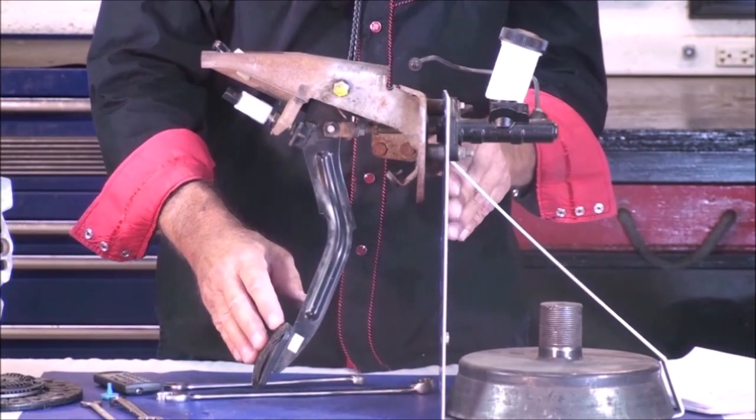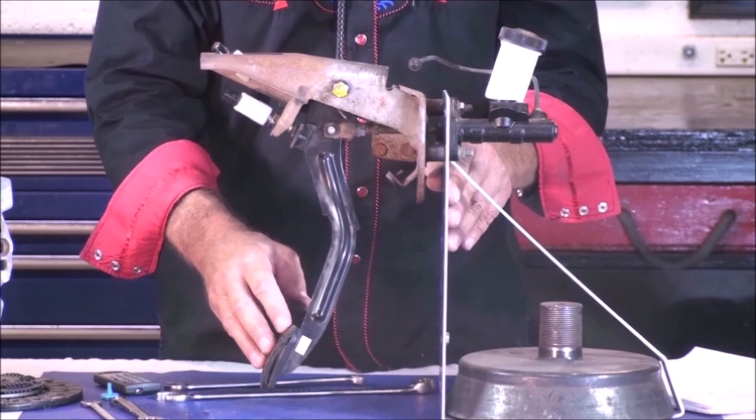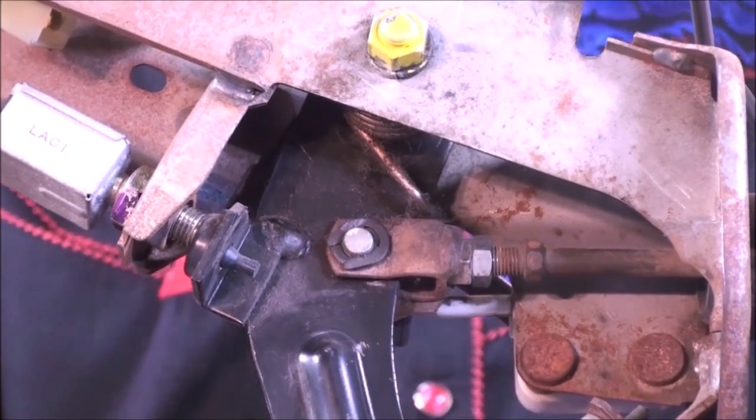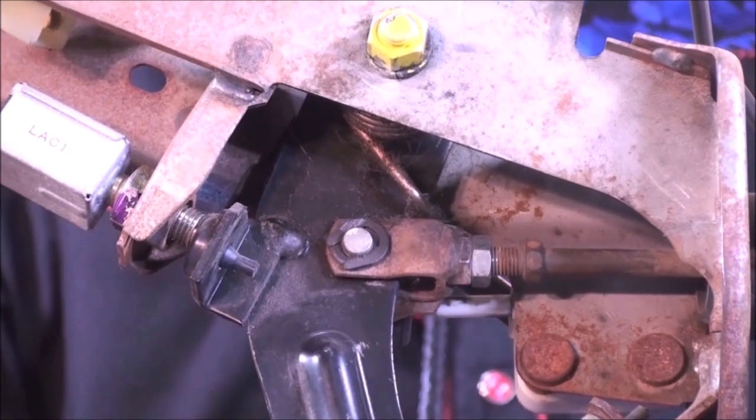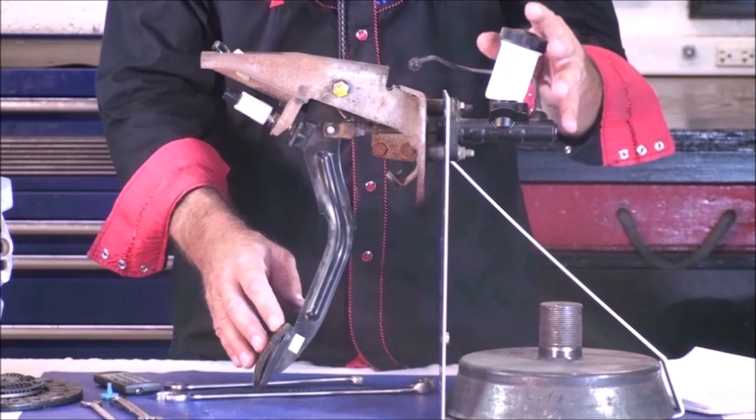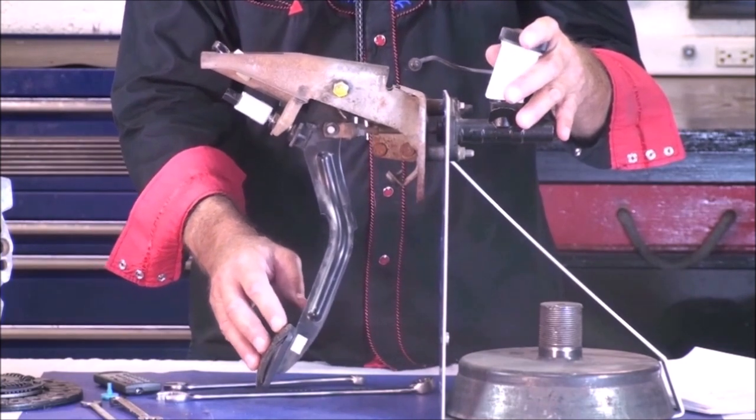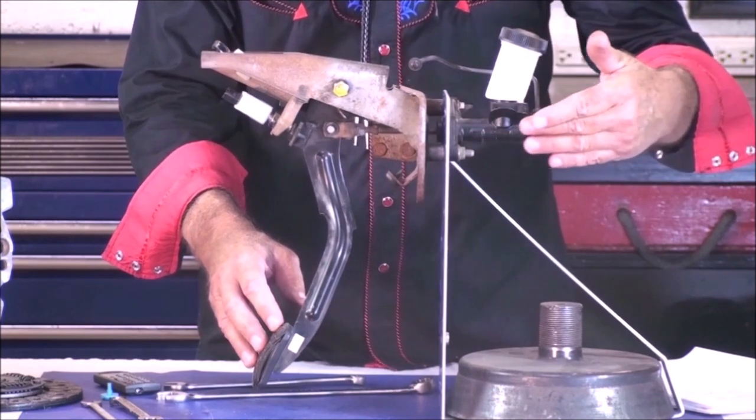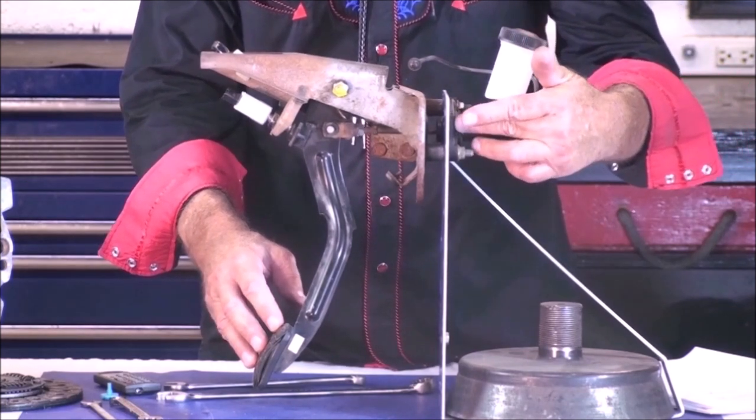The first step of any clutch adjustment is pedal free play. Free play is the amount of movement of the clutch pedal before the clutch pedal rod, the actuation rod, strikes the clutch master cylinder. There must be some free play so that the piston of the clutch master cylinder can actually return to its stop.